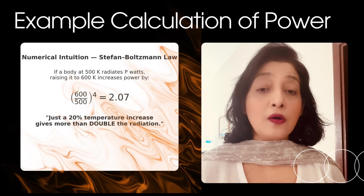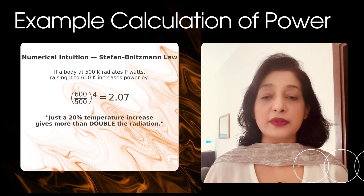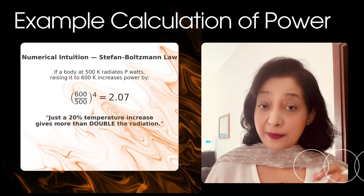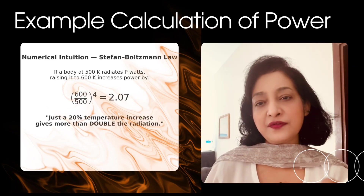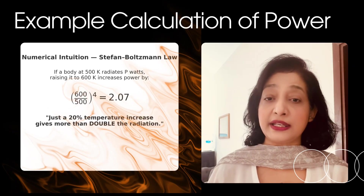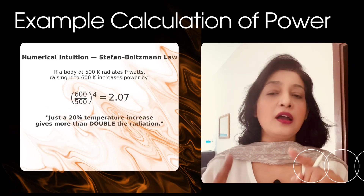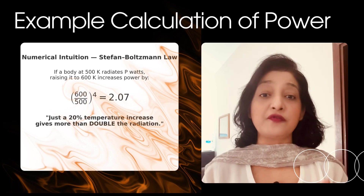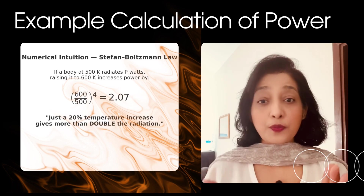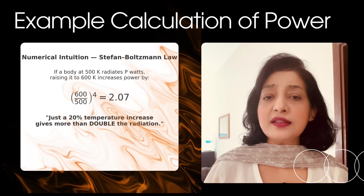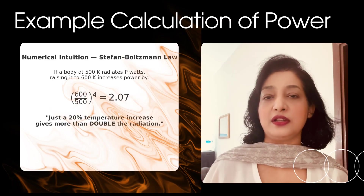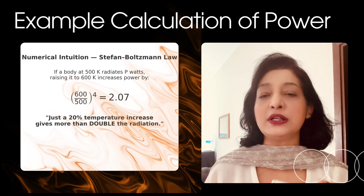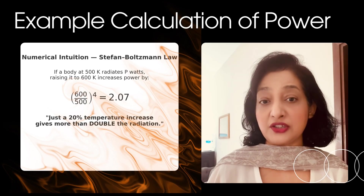Now let's look at a numerical example. For a temperature jump from 500 K to 600 K, we calculate how radiation increases using (600 divided by 500) raised to the power of 4. The final result is 2.07, showing that radiation more than doubles with only a 20 percent increase in temperature.